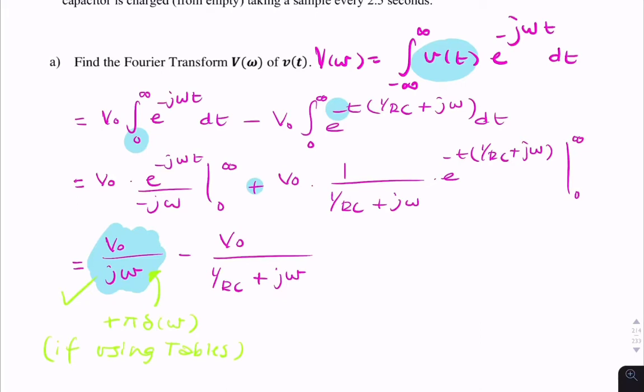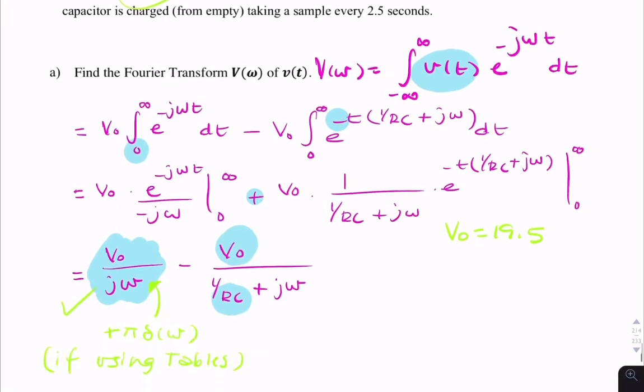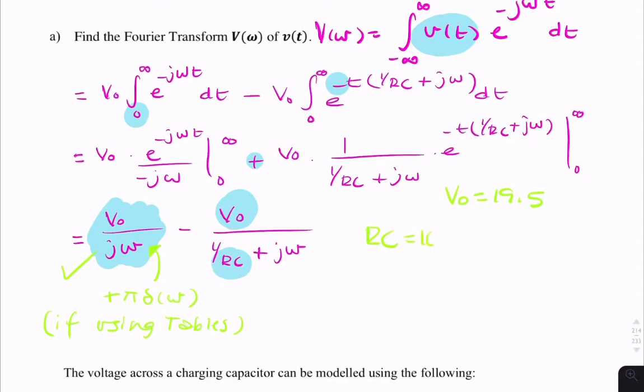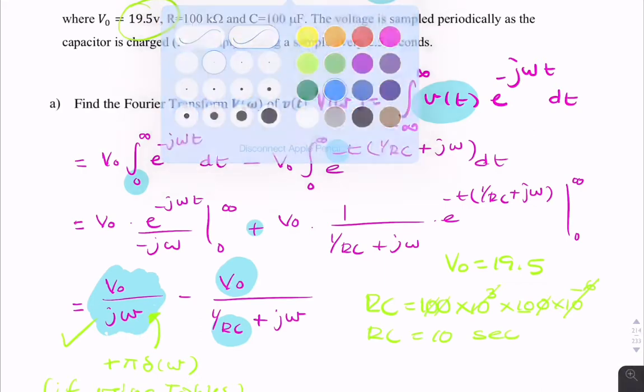We now need to replace RC and V0 with the numbers we're given. We know that V0 is 19.5, and we're given R and C. So RC is 100 kilo ohms times 100 micro farads, which leaves you with 10. So we can now write the final answer.